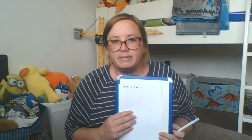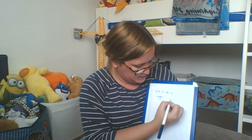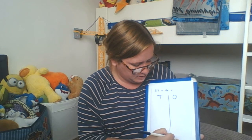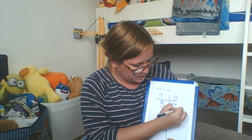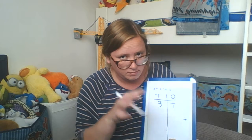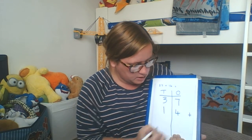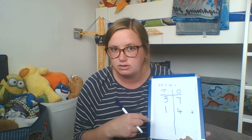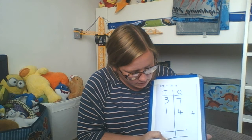Our next number sentence is 37 plus 14. Again, I set it up exactly the same way, just with that extra bit of gap in case I need to exchange tens. So I'm going to have my tens and my ones all the way down — split them up. Put in 37: 3 tens, 7 ones, addition symbol, and then I've got 14, which is 1 ten and 4 ones. Leave that little bit of space there in case I need to do some exchanging, and then put in my equal sign.